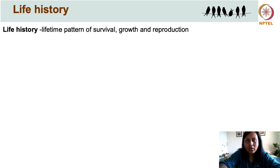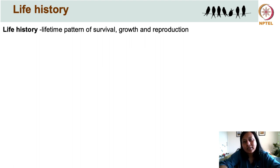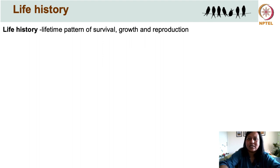Moving on, let's first define life history. Life history in its simplest terms refers to the lifetime pattern of survival, growth, and reproduction that we see in any species. In nature, when we look around us, we see a wide variety of life histories, even among seemingly very similar-looking species.